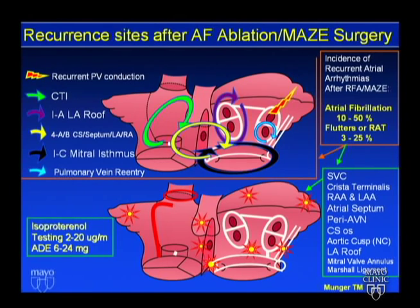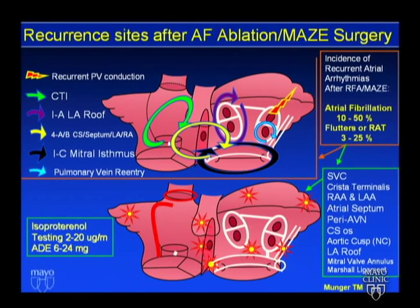Regarding recurrent arrhythmias: reentrant atrial flutter after AF ablation is a complication if you haven't checked your lines. The consensus document says that besides checking cavotricuspid lines, if you're doing other lines — mitral line, roof line, CS lines — you should document bidirectional block at the time, and if you don't have it, ablate more.